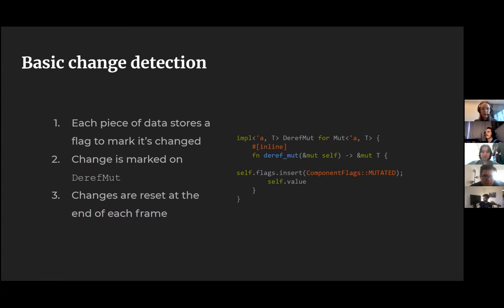The basic algorithm we had before is pretty straightforward. Each of our pieces of data stores a flag to mark whether it's changed or not. We flip this flag when we call deref_mut on our components. Rather than actually comparing the data and saying, well, is this different than it was before, we just say, in order to change something you probably have to mutably dereference it. So that's our change detection — it just automatically happens. And then at the end of the frame, we reset all of the changes that have occurred.